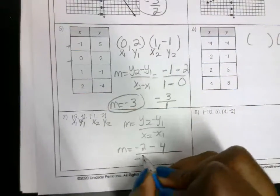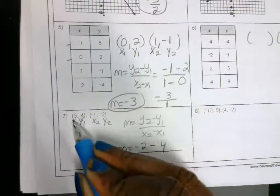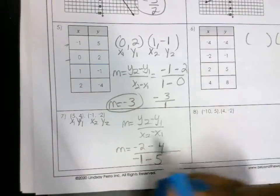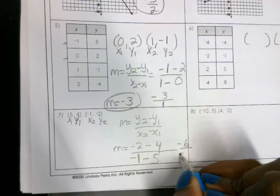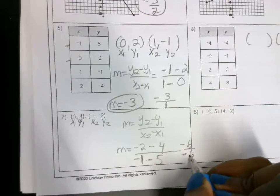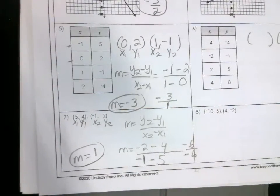So this is going to give you negative 6 on the top, negative 6 on the bottom. Negative divided by negative is a positive. So m here is positive 1, okay?